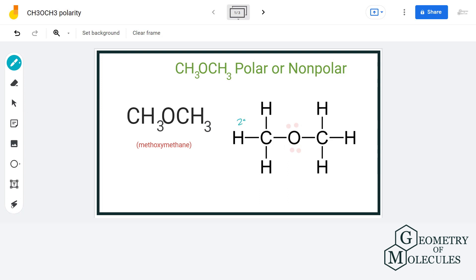The electronegativity of carbon is 2.5, that of oxygen is 3.5, and that of hydrogen is 2.1. So when we calculate the electronegativity difference between carbon and hydrogen, we will get the value of 0.4, which is very small and not enough to induce polarity in the bonds. So each carbon-hydrogen bond is non-polar.